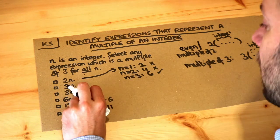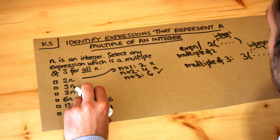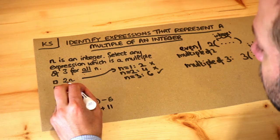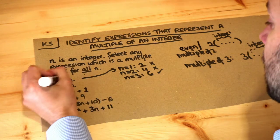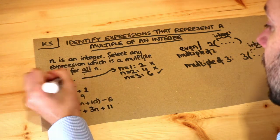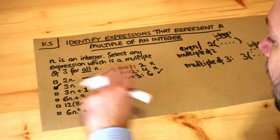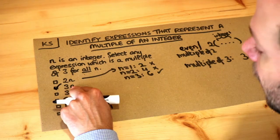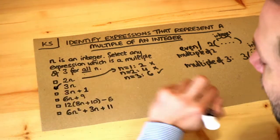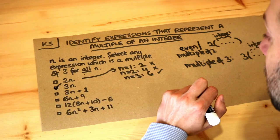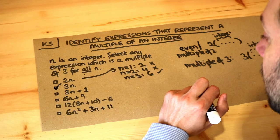What about three times something? Well yes, we've got a factor of three there so that will definitely be a multiple of three. Three times any whole number is guaranteed to be a multiple of three.